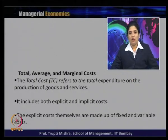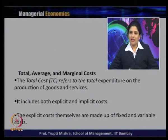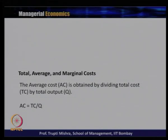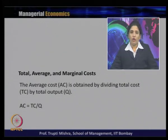Total, average and marginal cost: the total cost refers to the total expenditure on the production of goods and services. It includes both explicit and implicit cost; the explicit costs themselves are made of fixed and variable cost. Average cost is obtained by dividing the total cost by total output, so average cost is the cost per unit of output — AC = TC / Q, where Q is the number of units of output and TC is the total cost.